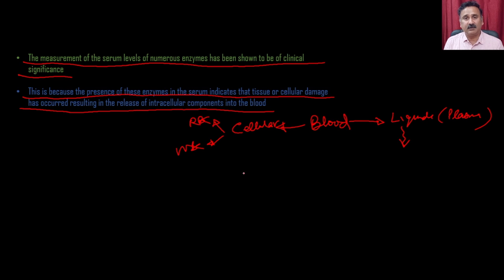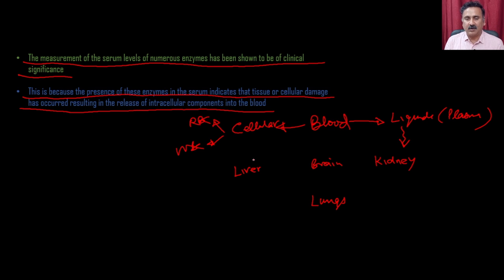In a human body you have different types of organs — you can have the liver, you can have the brain, you can have the kidney, and you can have the lungs and so on. All these organs are communicating with each other with the help of the blood, because they are sending all their components into the blood.